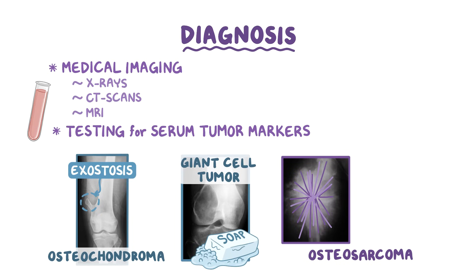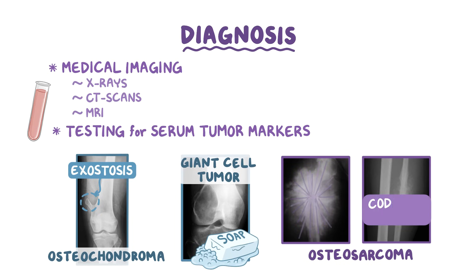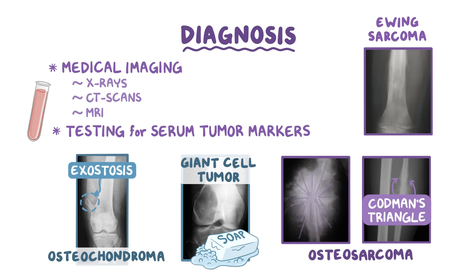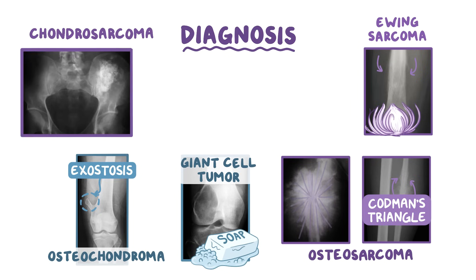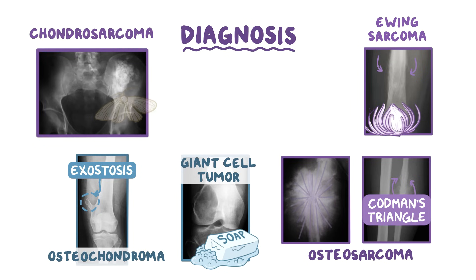Osteosarcomas also cause the periosteum to lift, and that's commonly called Codman's triangle. In Ewing sarcoma, x-ray shows lytic bone lesions referred to as an onion skin appearance, because the periosteum looks like a sliced onion bulb. In chondrosarcoma, there are patchy lytic lesions that make the bone look like a moth-eaten piece of cloth.